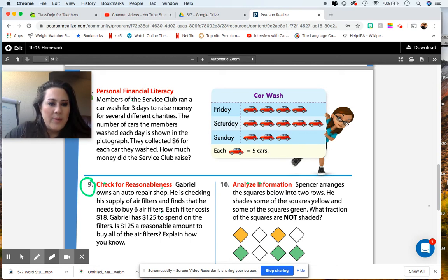Gabriel owns an auto repair shop. He is checking his supply of air filters and finds that he needs to buy six air filters. Each filter costs $18. Gabriel has $125 to spend on the filters. Is $125 a reasonable amount to buy all of the air filters? Explain how you know. Here's your hint, guys. You are going to multiply. This is a review.